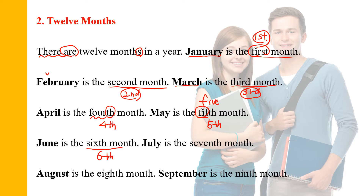July is the seventh month. August is the eighth month. September is the ninth month — spelling N-I-N-T-H, ninth month.